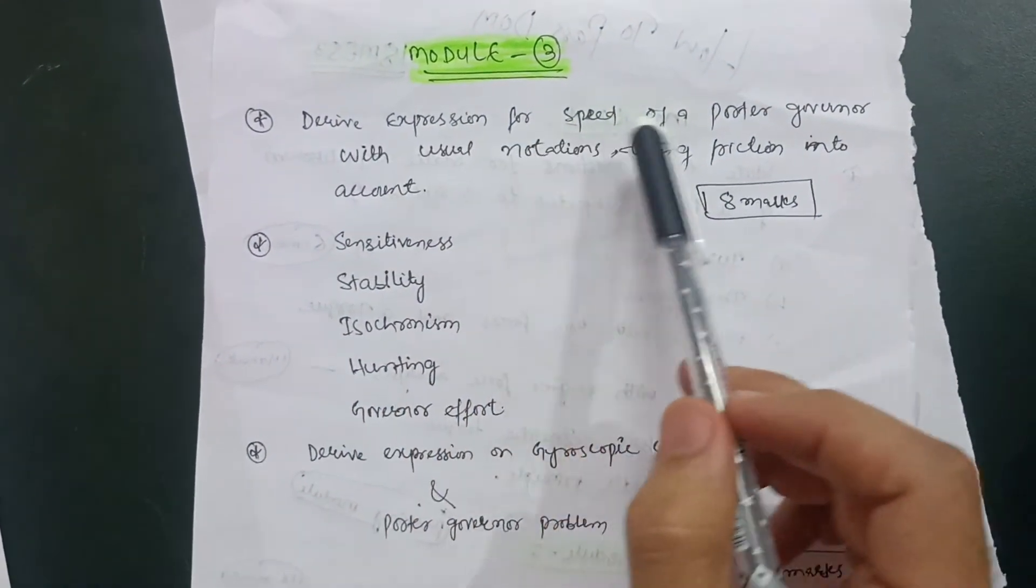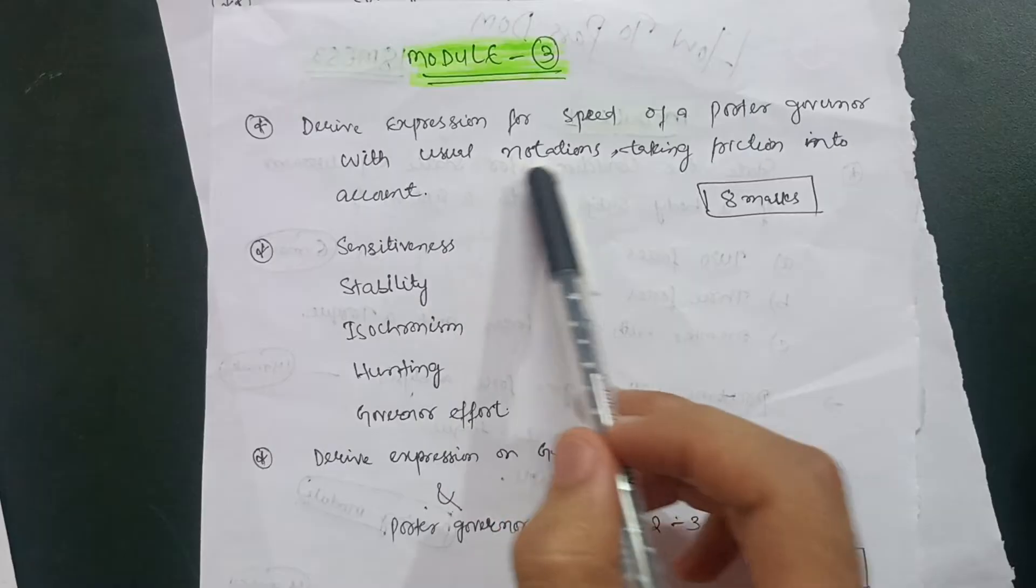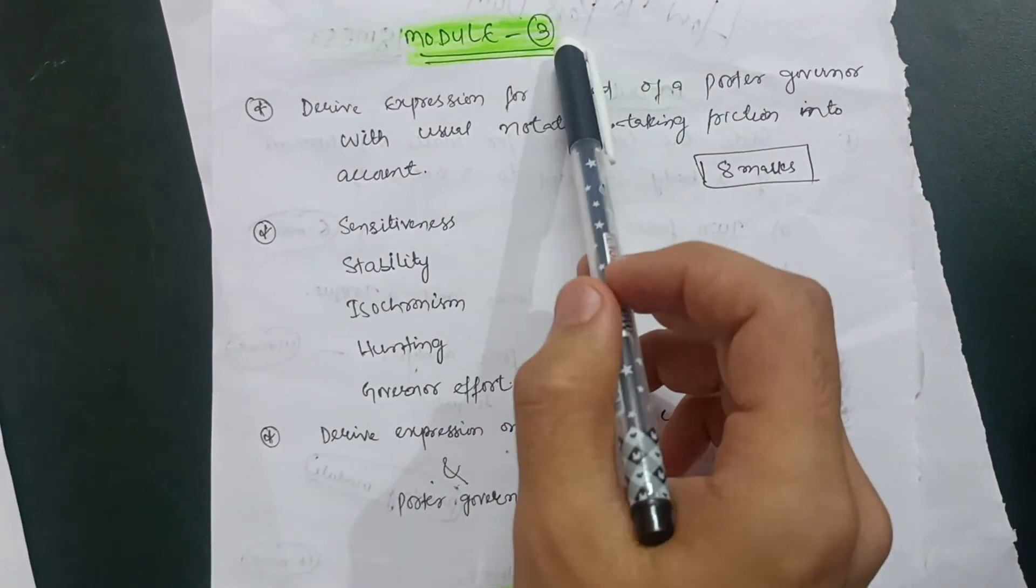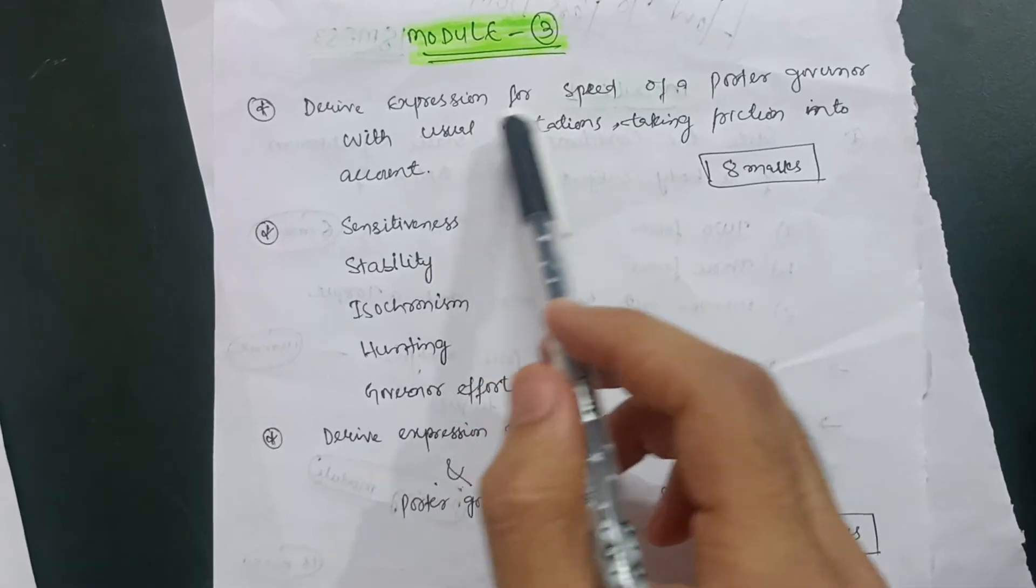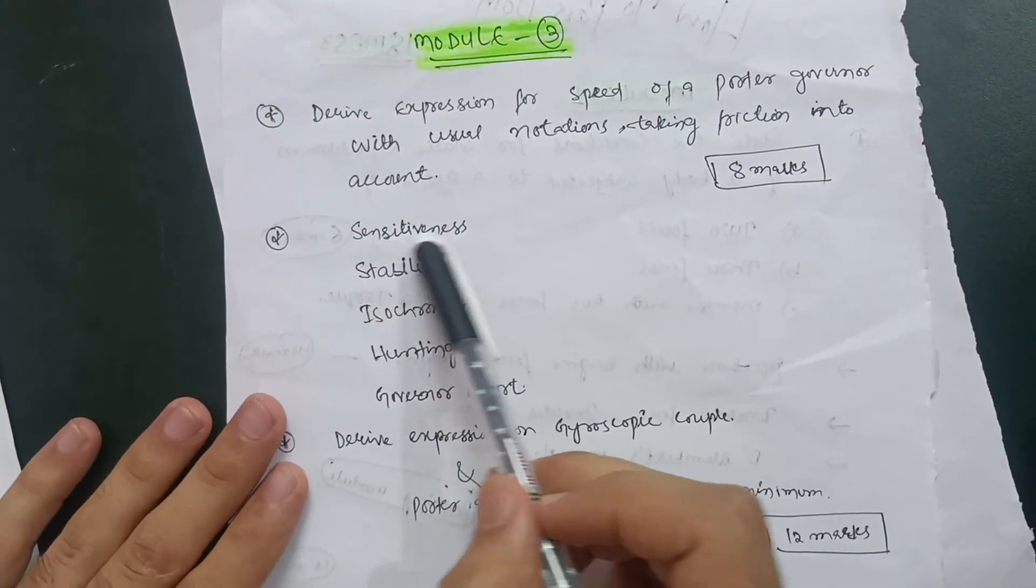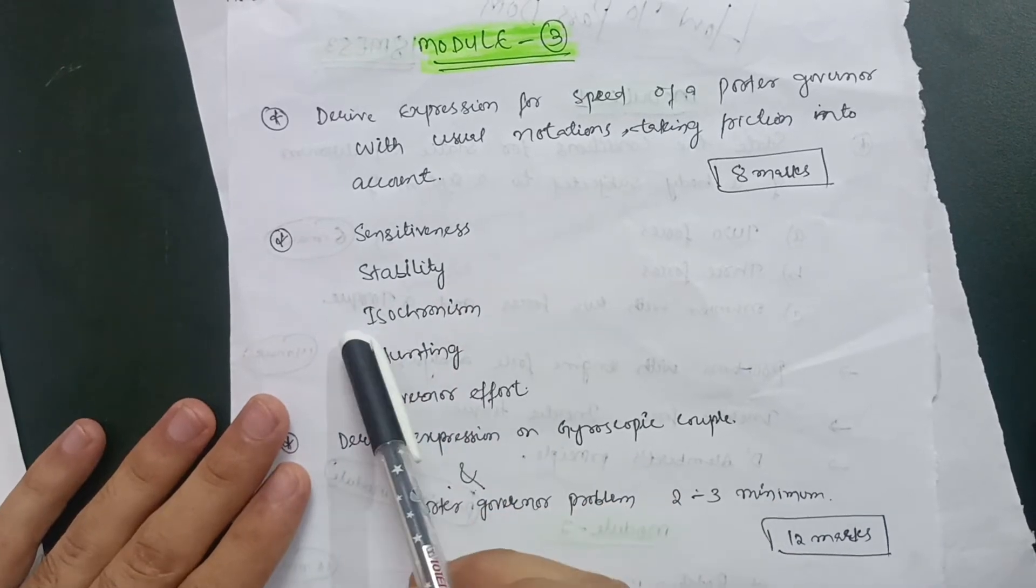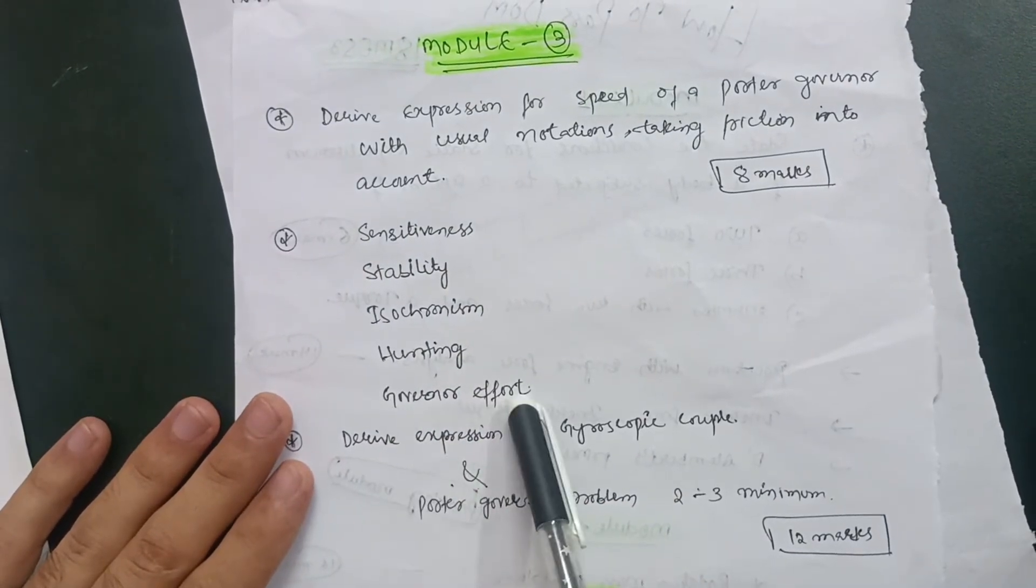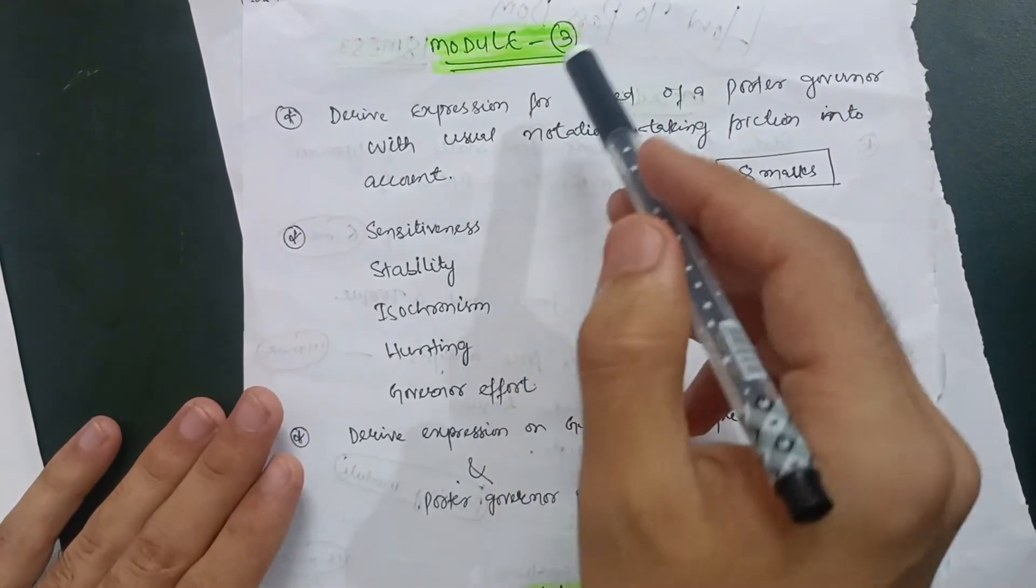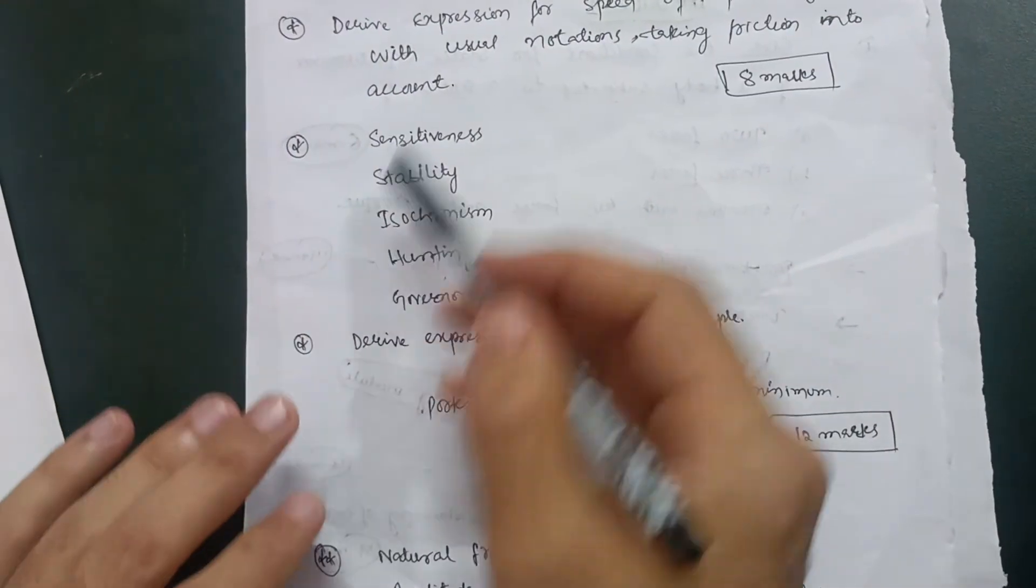You have to go through this reciprocating masses. Then go for Module 3. There is a derivation part: derive expression for speed of a Porter governor with usual notations taking friction into account. This will be the derivation part in Module 3. Don't skip it. Then some theory concepts are there: sensitiveness, stability, isochronism, hunting, and governor effort.